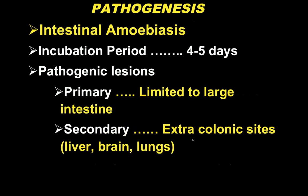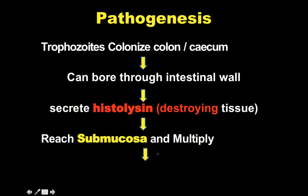Coming to the pathogenesis, intestinal amoebiasis has a variable incubation period, generally four to five days. Pathogenic lesions can be primary, limited to the large intestines, or secondary, where extra-colonic sites are involved like the liver, brain, or lungs. Regarding pathogenesis, the trophozoites colonize in the colon and cecum, pass through the intestinal wall, secrete histolysin, destroy tissue, and reach the submucosa where they multiply.